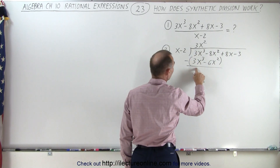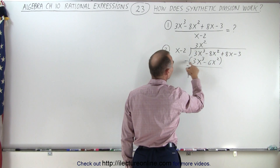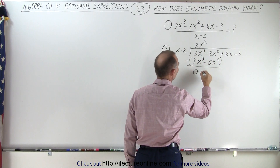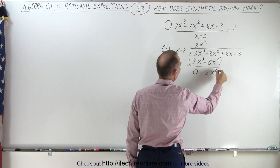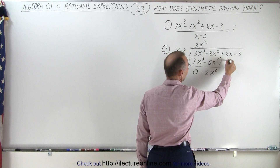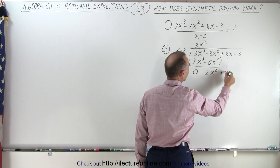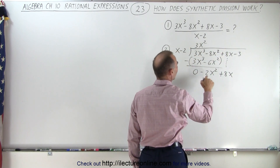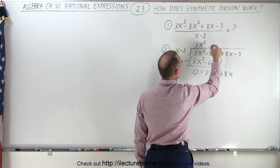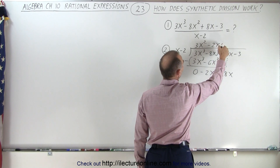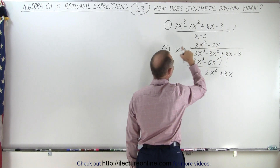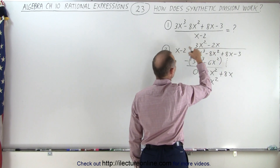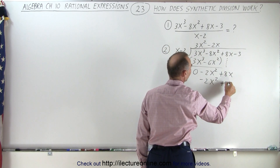So 3x cubed minus 3x cubed is 0. A minus times a minus becomes a plus, so minus 8 plus 6 gives us minus 2x squared. Then we drop down the next term, plus 8x. We ask ourselves: what times x gives us minus 2x squared? That would be minus 2x. Minus 2x times x gives us minus 2x squared, and minus 2x times negative 2 gives us plus 4x.